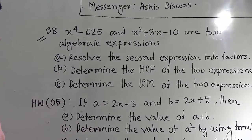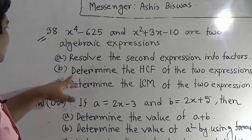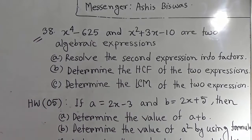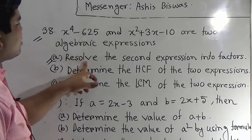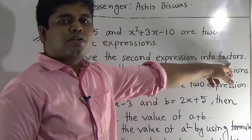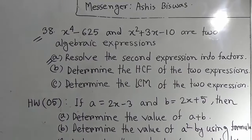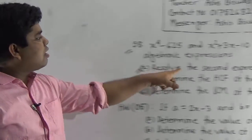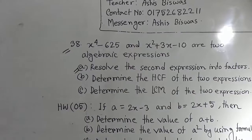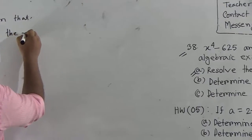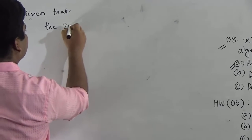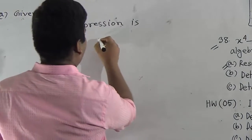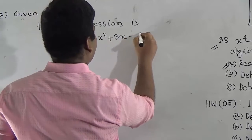My dear students, in our previous class we already learnt how to determine the HCF and how to determine the LCM of some expressions. The first part of the question is: resolve the second expression into factors. So let us start. First of all, you write: given that the second expression is x squared plus 3x minus 10.